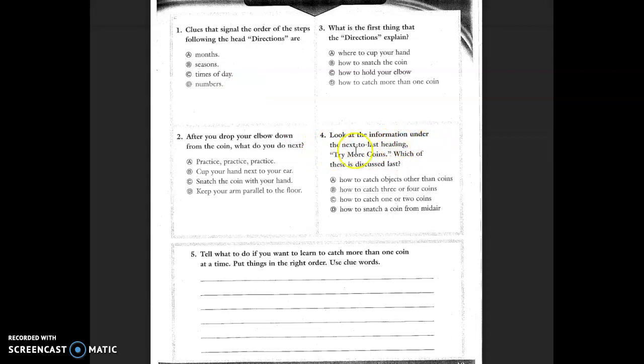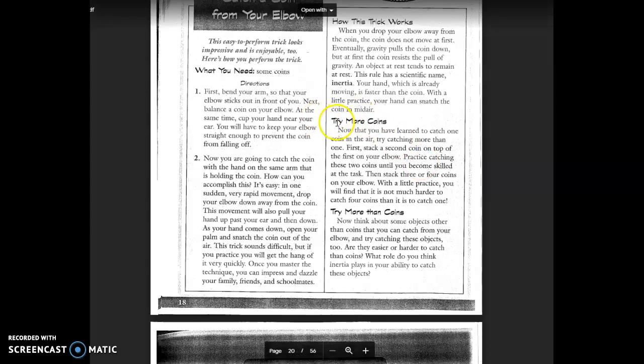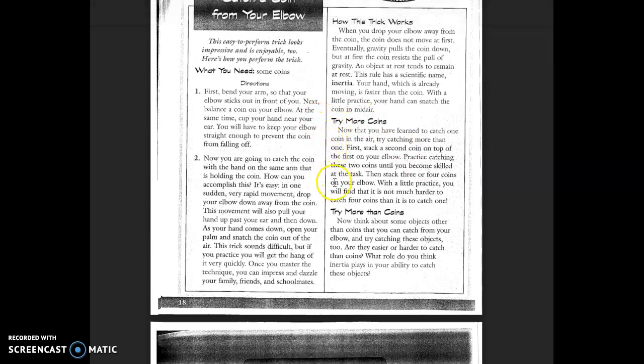Okay, four. Look at the information under the next to last heading, try more coins. Which of these is discussed last? So, you need to go back to try more coins and find out what is discussed last. A, how to catch objects other than coins. B, how to catch three or four coins. C, how to catch one or two coins. And or D, how to snatch a coin from midair. So, go back to try more coins and figure out the last thing that it talks about in this section.